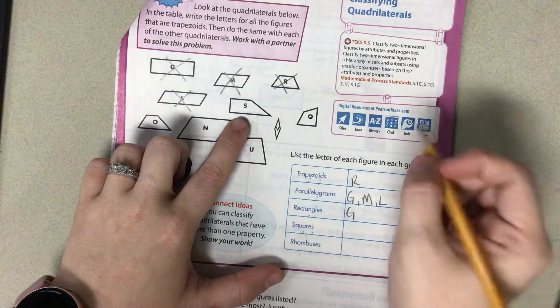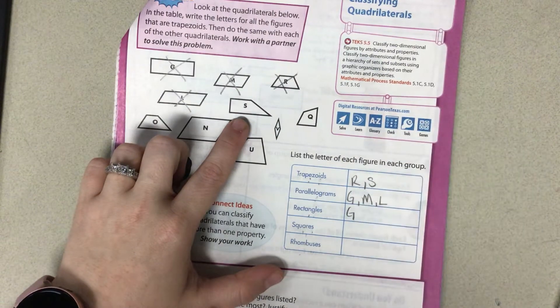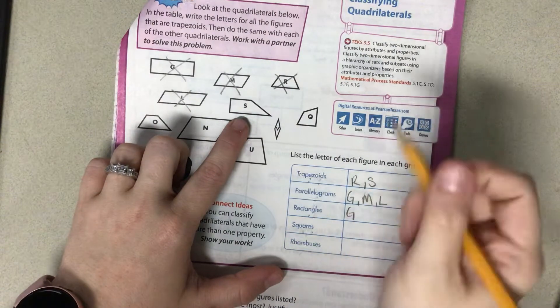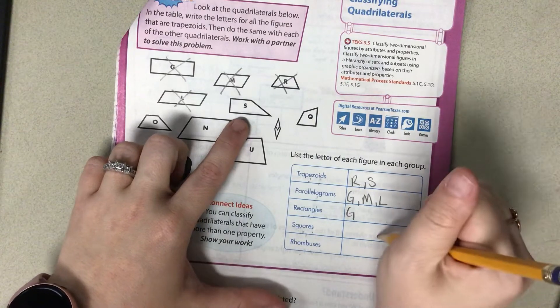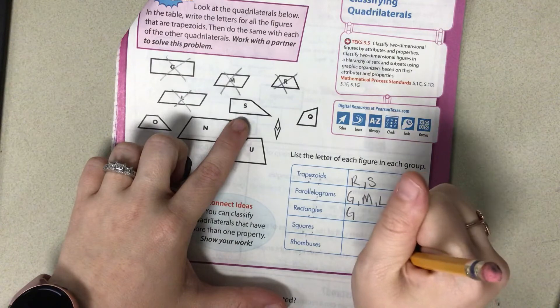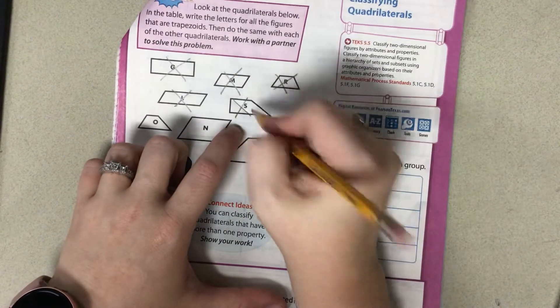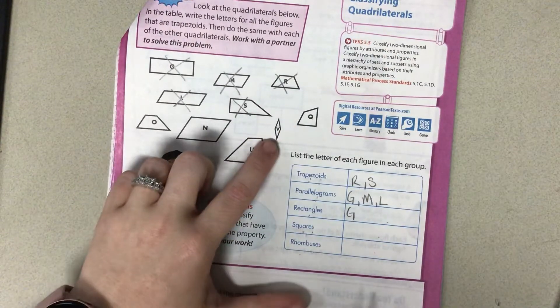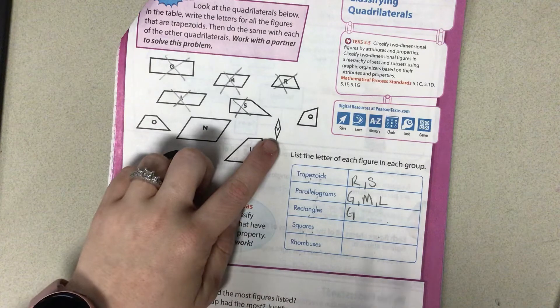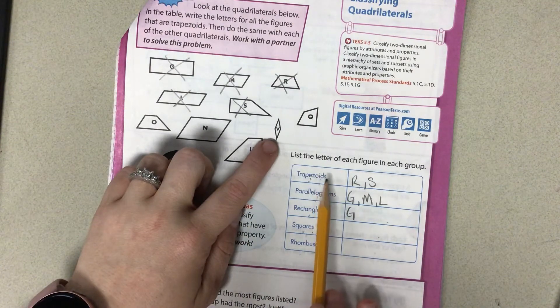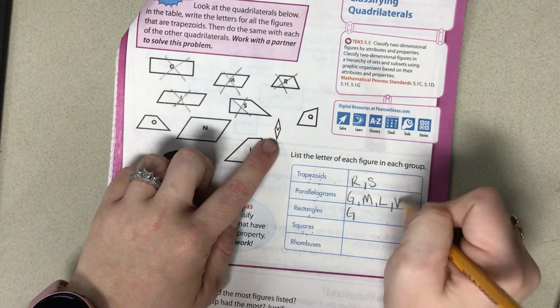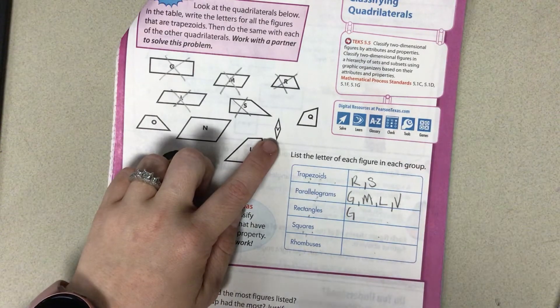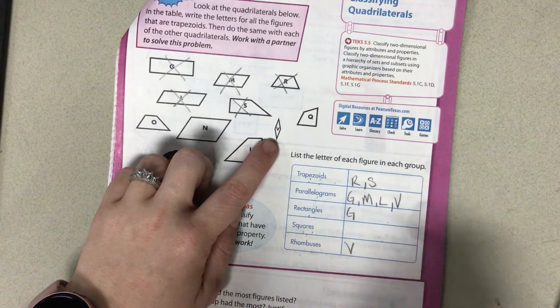B. It's not a trapezoid. It does have four sides that are parallel. No right angles, but the sides are the same length.